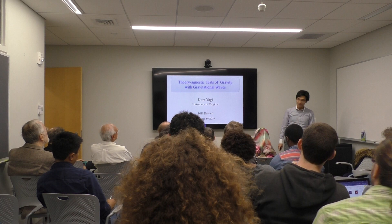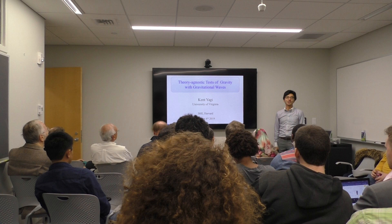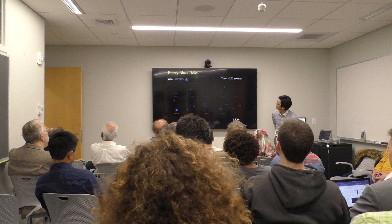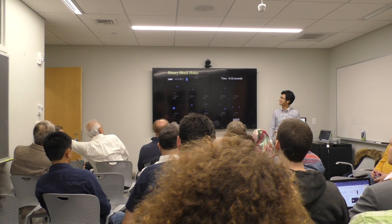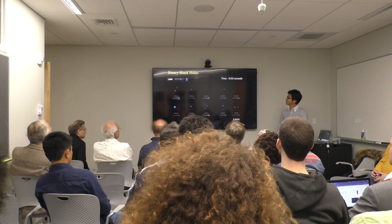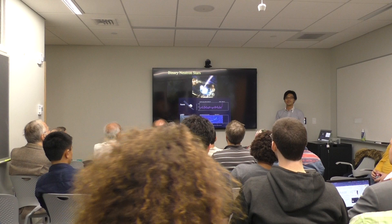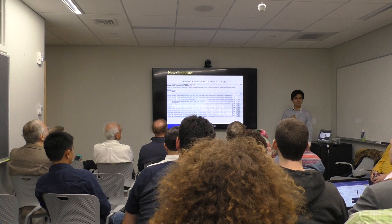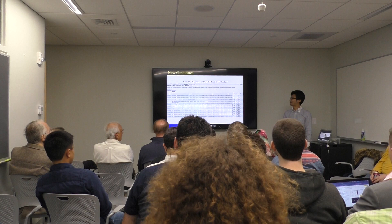Thank you very much for inviting me today. I would like to explain some model-independent tests of GR that you can do with gravitational wave observations. This is a list of ten binary black hole merger events that LIGO and Virgo found so far with corresponding waveforms. There's also a binary neutron star merger event, which marked the dawn of multi-messenger astronomy. Right now they are in a third observational run, currently in an upgrading phase, but they should come online soon.